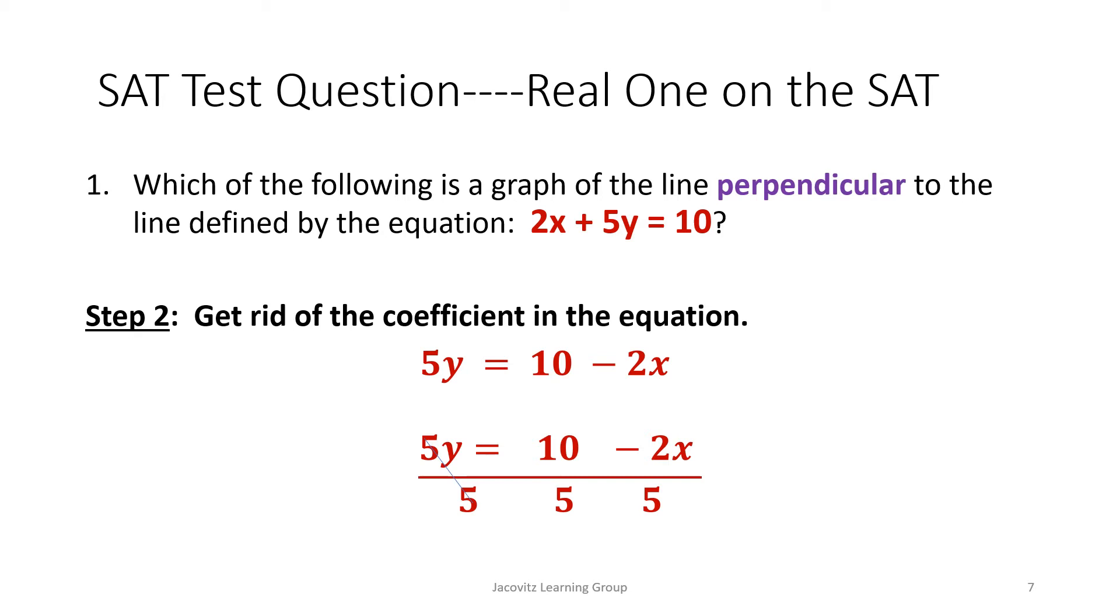Each term over here has to come over 5. This just crosses out and cancels it out. 10 divided by 5 is going to be 2. This is going to be negative 2/5 x. So that's what's shown here. This is your slope.